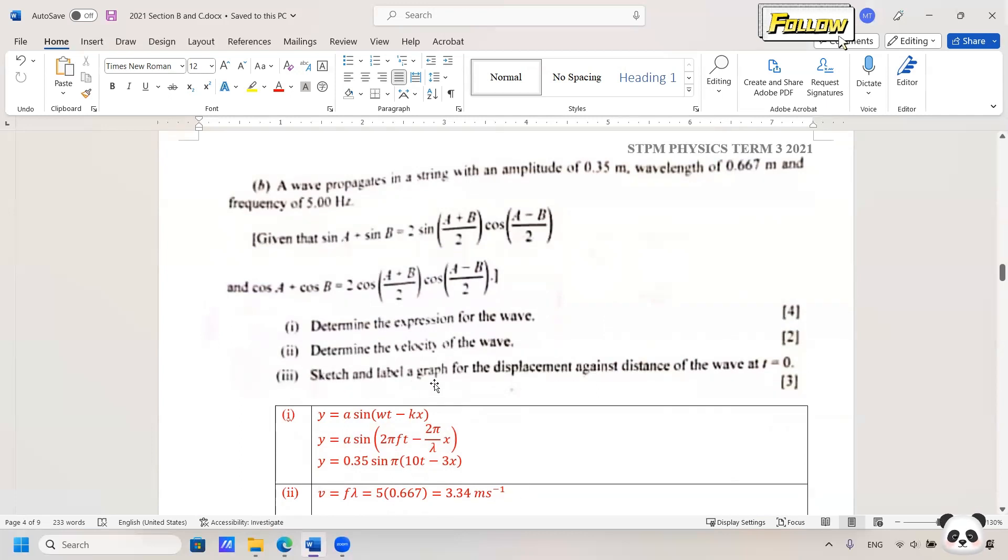The next thing is to sketch and label a graph for the displacement against distance of the wave at t equal to 0. We need to sketch and label displacement against distance. There are some things you need to put into the graph.